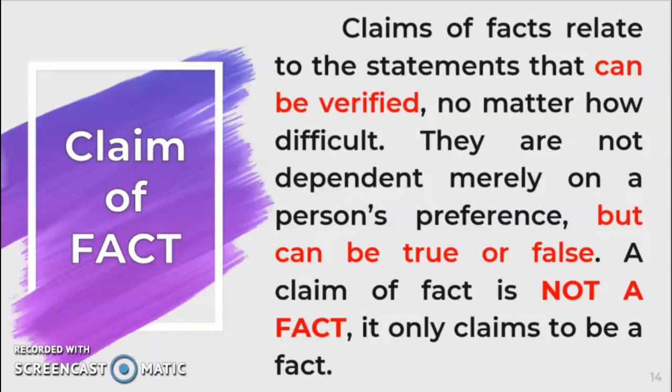What do we mean by claim of fact? Claims of fact relate to statements that can be verified, no matter how difficult. They are not dependent merely on a person's preference, but can be true or false. A claim of fact is not a fact — it only claims to be a fact. Facts that are universally accepted are not considered claims of fact because there is no more disagreement about their truthfulness. Claims of fact talk about what is or what is not, saying that certain conditions exist. These are grounded on reliable authority such as science or history. The different types of factual claims — which are generally objective — are factual or historical, relational causal connections, and predictive.